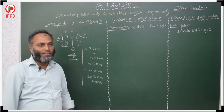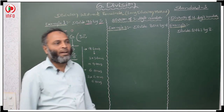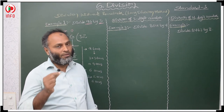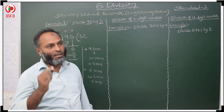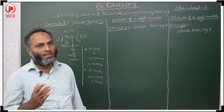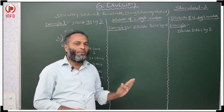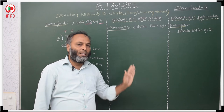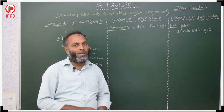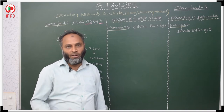So the process: first take the extreme left digit, then the next digit — moving one by one from left to right. This is how we proceed for a 2-digit number. In the next example, it is a 3-digit number.